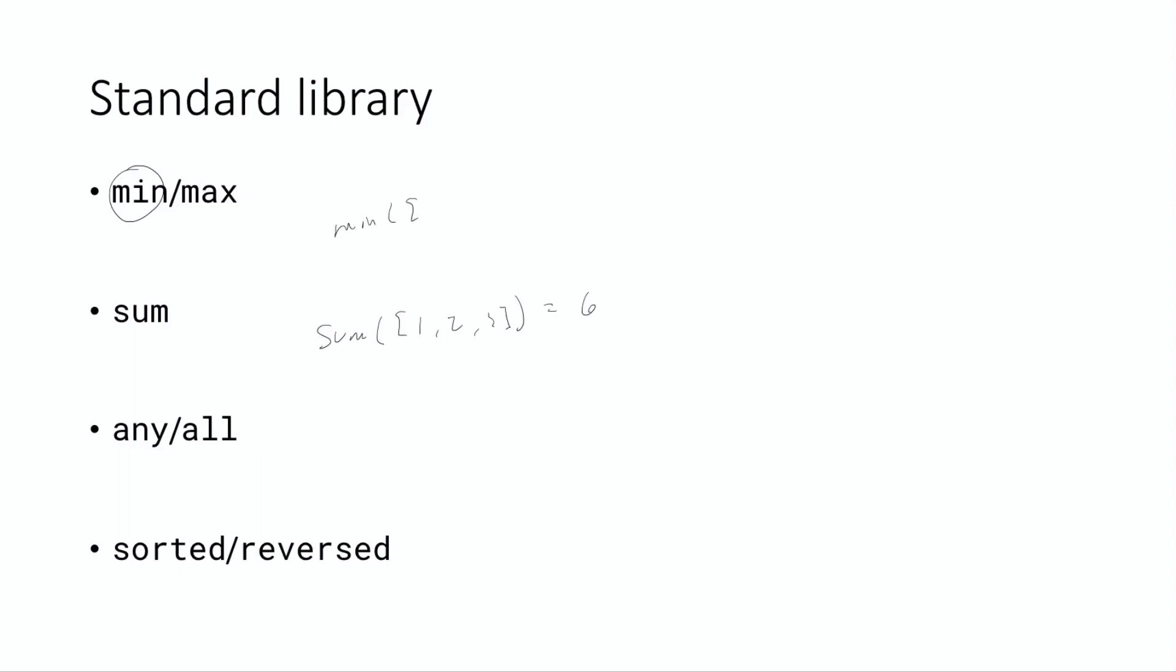I'll quickly write up here the min of one two three is of course one and the max value is of course three. Just to make that extra clear.